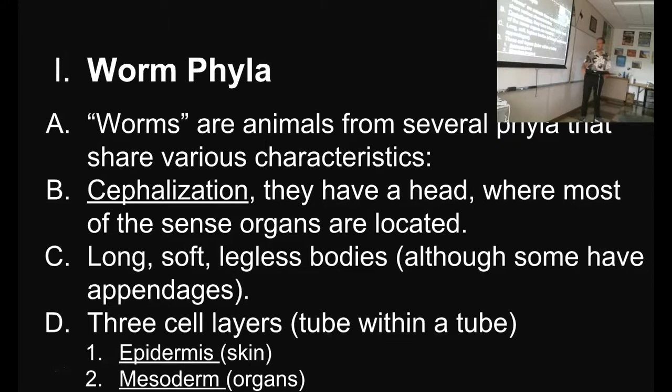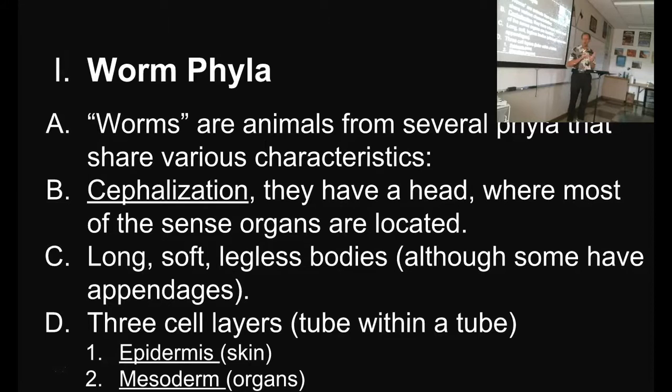We name these layers the epidermis — the skin on the outside. Epi means upon or around, so the epidermis is the tissue layer that's upon or around the creature on the outside. Meso means in-between or middle, so mesoderm is the middle tissue — that's all the organs. And then the endoderm, which is number three. Endo means inside, so endoderm is the gastrointestinal tract — the stomach and the intestines.